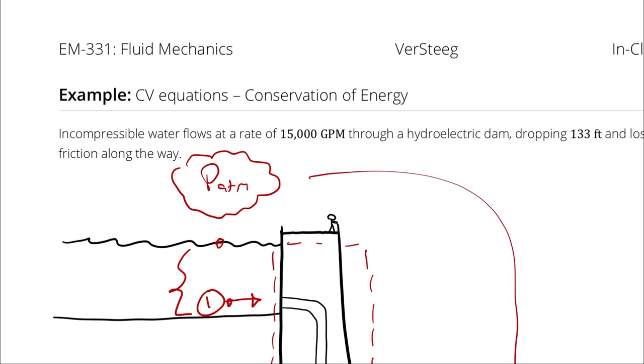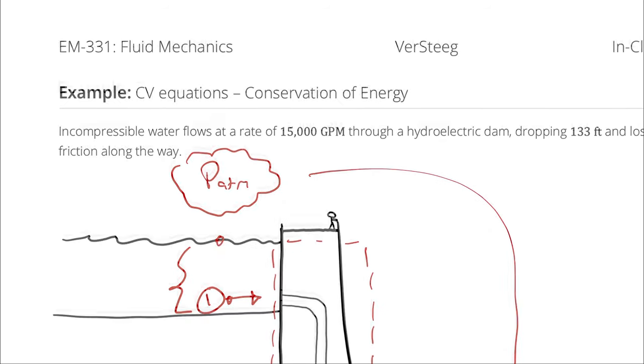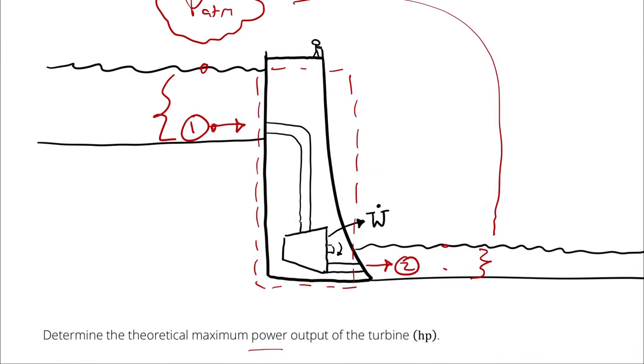Then I could describe the volumetric flow rate as the average velocity times cross-sectional area, and if the inlet and outlet areas are relatively close to one another, that means the average velocity must be relatively close to one another. Therefore,